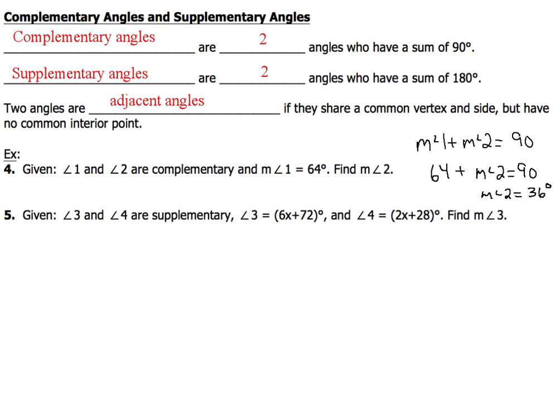Now, let's take a look at example 5. Number 5, we're told that angles 3 and 4 are supplementary, and angle 3 is the expression 6x plus 72 degrees, and angle 4 is 2x plus 28 degrees. We've got to find the measure of angle 3.